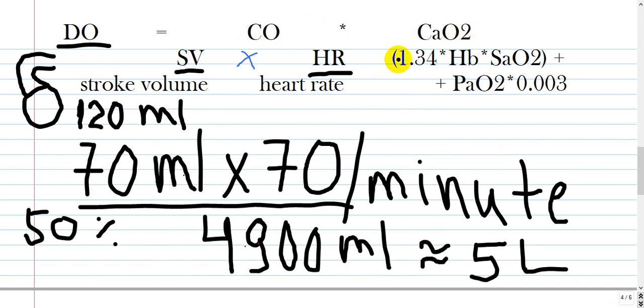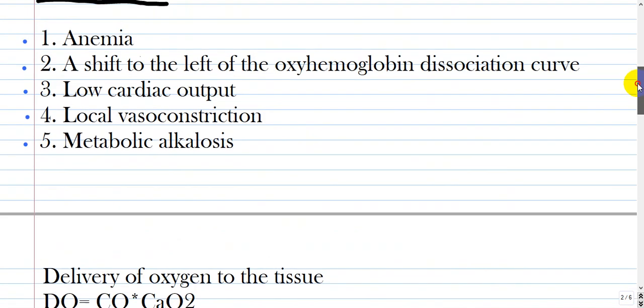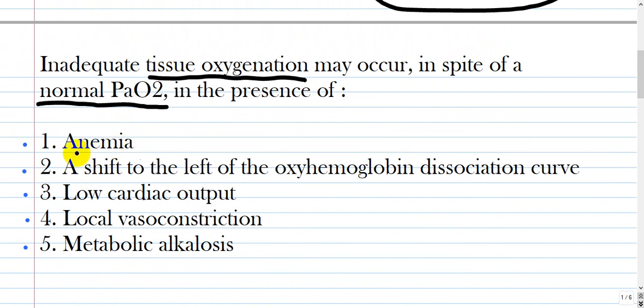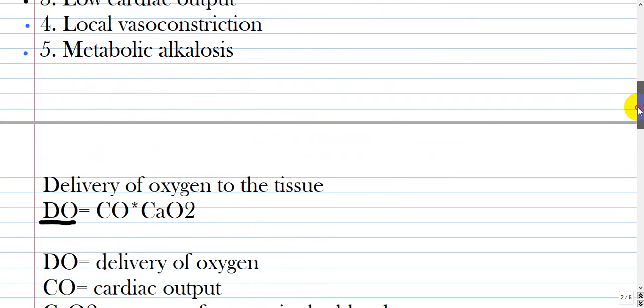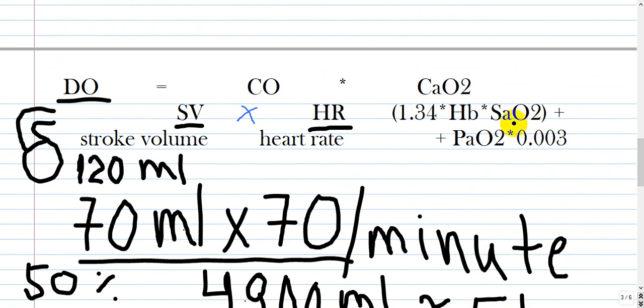Concentration of oxygen in the blood has another sub-formula: 1.34, which is a constant, multiplied by hemoglobin. Going back, you see the option anemia. Low cardiac output is correct. Any deviation in cardiac output may lead to inadequate tissue oxygenation. Anemia is low hemoglobin. Saturation of oxygen, saturation of hemoglobin with oxygen, and partial pressure of oxygen, which is insignificant at normal PaO2.